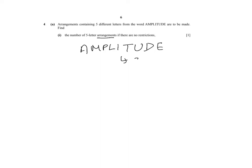Amplitude has nine letters in total, so n will be nine, and our r will be equal to five. Using the permutations formula, we put 9 factorial over 9 minus 5 factorial, which is 9 factorial over 4 factorial, giving us 15120.